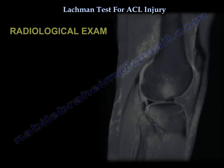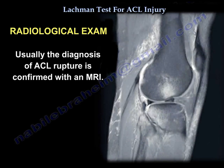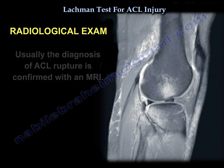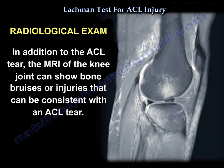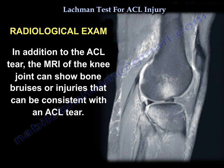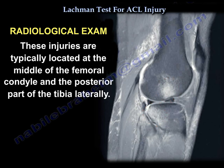The diagnosis of ACL rupture is confirmed with an MRI. In addition to the ACL tear, the MRI of the knee joint can show bone bruises or injuries consistent with an ACL tear. These injuries are typically located at the middle of the femoral condyle and the posterior part of the tibia laterally.